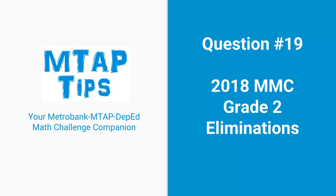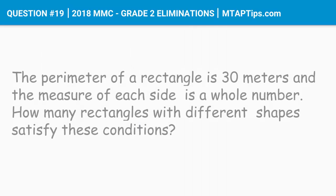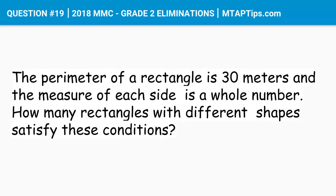Question number 19 for 2018 MMC grade 2 eliminations. The perimeter of a rectangle is 30 meters and the measure of each side is a whole number. How many rectangles with different shapes satisfy these conditions?